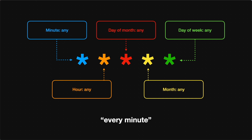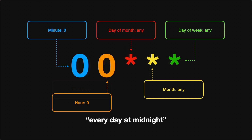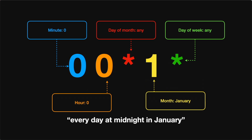Now that you see what each position means, let's revisit the example of every single minute. Because we have a star in all five slots, we're telling the system we want a job to run any minute, any hour, any day of the month, any month, and any day of the week — which essentially translates to every minute. Another common example is every single hour: a 0 in the first position means the job runs at minute 0 of any hour. Adding another 0 gives you every single day at midnight — minute 0, hour 0. A more complex example like `0 0 * 1 *` means every day at midnight, but only in the month of January.